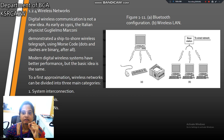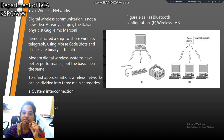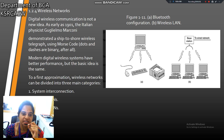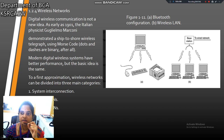This is the example for wireless network. For example, Bluetooth. Bluetooth is the best example for a wireless network. Modern digital wireless systems have good performance, but the basic idea is the same — it is not connected to a wire, it is connected to the cloud.